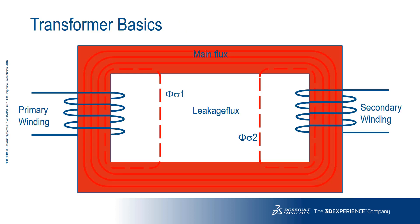Let's start with the very basics of transformers. In the ideal world, different windings on primary and secondary circuits produce transformed voltages and currents on the output compared to the input, according to very simple calculations.